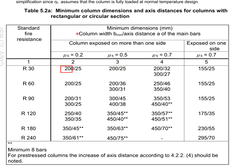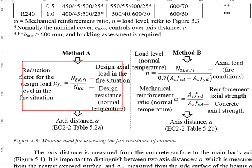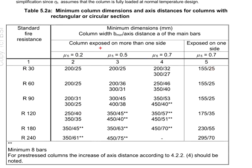The first number here represents the column width. The second number here represents the axis distance. Taking this as an example, you would like to design a column with the fire rating of one and a half hours. And you use the formulas to calculate the μfi. And the result is 0.5. That gives you two options.